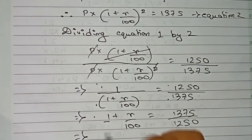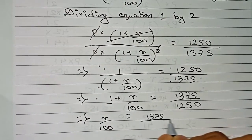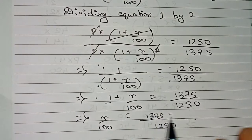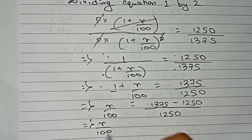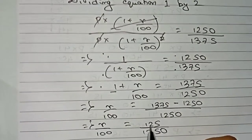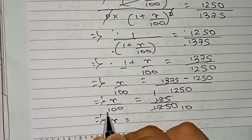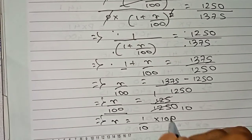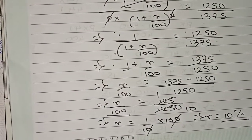Now take 1 to the other side for subtraction: R by 100 equals 1375 by 1250 minus 1. That gives 1375 minus 1250 over 1250, which equals 125 over 1250. Simplifying, 125 over 1250 equals 1 over 10. Multiplying both sides by 100: R equals 1 over 10 into 100, so R equals 10. Therefore, the rate of interest is 10 percent.